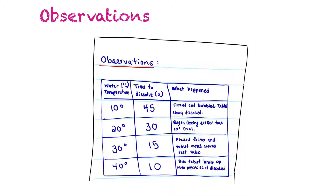While you're conducting your experiment, you're going to record observations. Remember, you want to record both qualitative and quantitative observations. You could put them in paragraph form and list everything you observe, or you might want to put them in a table form, which is a bit more organized and keeps everything neat and tidy.